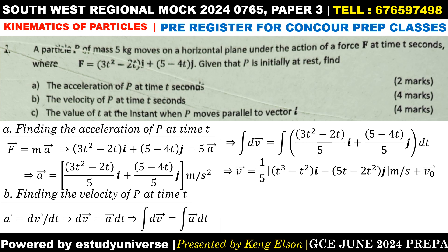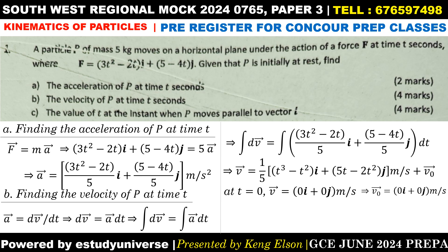We factorize the common factor of one-fifth between the i and j components. Integrating the i component: t² integrates to t³/3 and 2t integrates to t². For the j component: 5 integrates to 5t and 4t integrates to 2t². Since this is an indefinite integral we add a constant of integration, which is the initial velocity. The initial condition says the particle was at rest, so t = 0 gives initial velocity equal to zero, making the constant of integration zero. We can then write out the velocity expression.